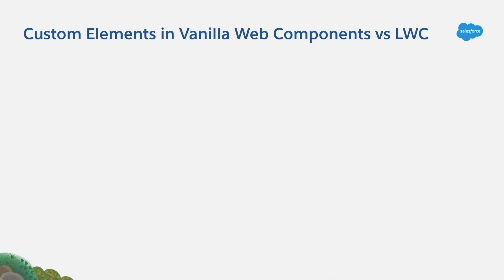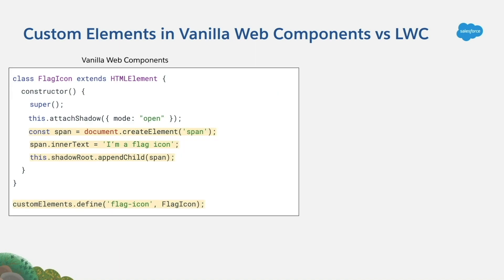Now let's take a look at how the custom elements web API is used when creating vanilla web components. Normally, a component that represents a UI element is going to be a custom element itself, and it is going to be defined via a class. In the class, we are going to implement its behavior. What we are doing is to first attach a shadow tree. If you don't know what Shadow DOM is, you can take a look at another quick take that I published in the Salesforce Developers YouTube channel, which is called 'Explaining the Shadow DOM.'